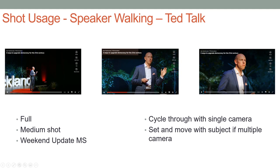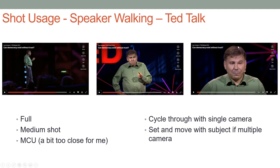If you look at a TED Talk, you see that they switch shots pretty frequently. This is the full shot — the long shot that covers feet to head. This is the medium shot where they tend to spend most of their time. And this is the weekend update medium shot, elbows to head, where it also seems like they spend most of their time. I think these two are the most useful shots. The long shot is good for varying the shot, providing perspective of the audience, getting a look at the stage. For another TED Talk: long shot, medium shot, medium close-up — armpits to top of head. And again, this is a bit too close for me; if I'm viewing this full screen, I don't really want to be that close to this guy's face.